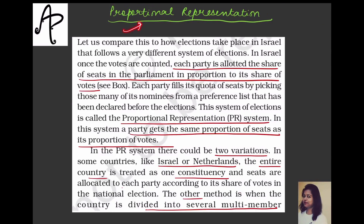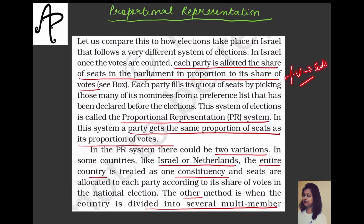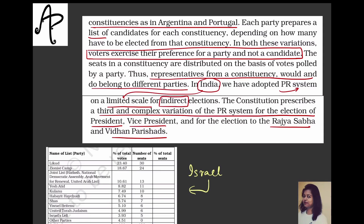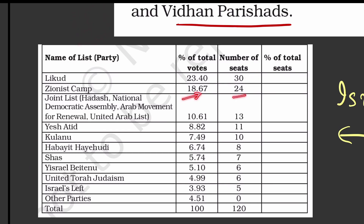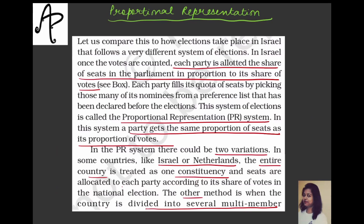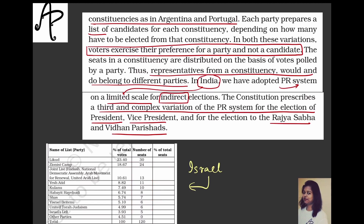The next system — proportional representation (PR) — is in contrast to FPTP. As the name says, proportional means however many percent of votes a party gets, it gets that same proportion of seats. In Israel, once votes are counted, each party is allotted seats in proportion to its share of votes. If a party got 23% of votes, it gets 23% of available seats. You can see votes and seats decreasing proportionally together.